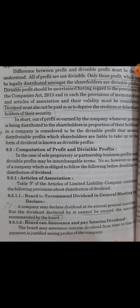We must remember here that the rate of dividend of equity shares will be decided by the Board of Directors. The rate of dividend of preference shares will not be decided by the Board of Directors in the annual general meeting because it is already prefixed at the time of issue of the preference shares. So far as equity shares are concerned, the rate of dividend will be recommended by the Board of Directors and declared by the shareholders in the annual general meeting. Shareholders cannot recommend a higher rate of dividend on equity shares.